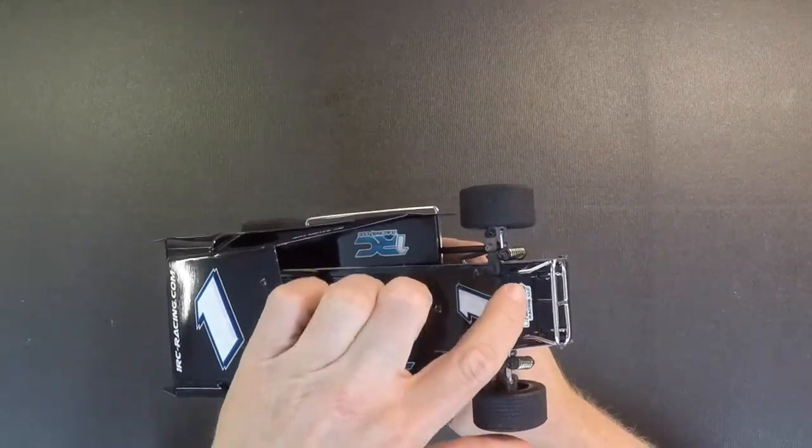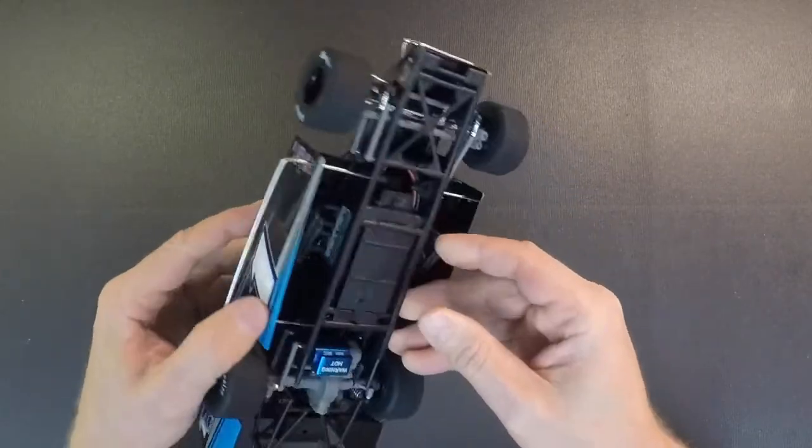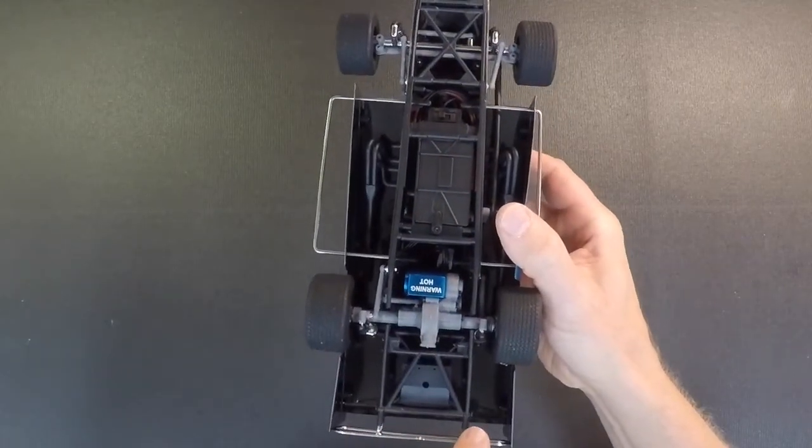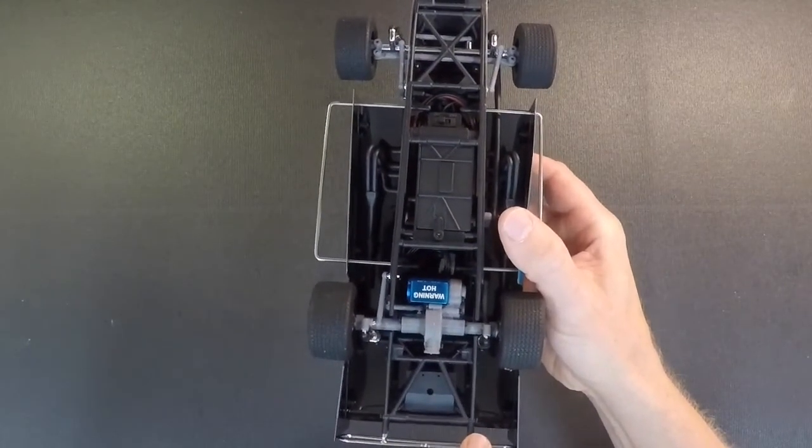So the front nerf bar presses into the cage, the side nerf bar presses into the cage here, here and here, and then the rear bumper presses into the cage here.